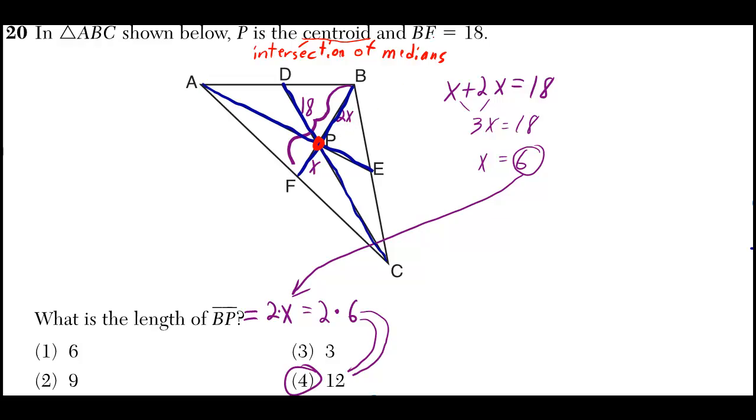And here they give us the length of the median, they give us that it's 18. So you say 2x plus x is equal to 18, or you could start by saying 3x is equal to 18, so x is equal to 6.